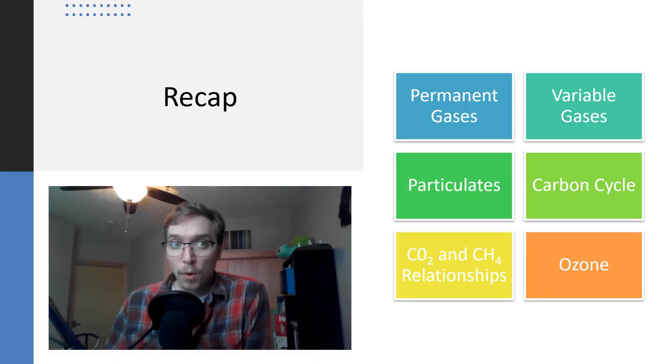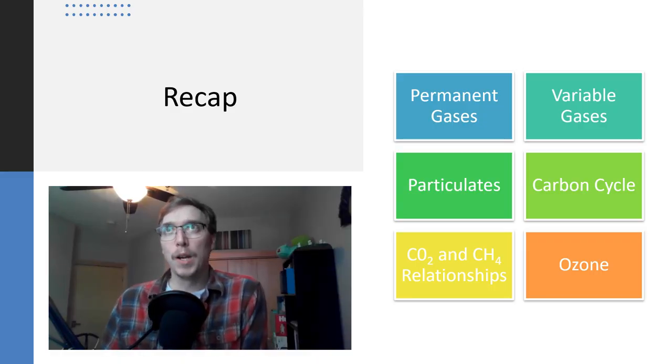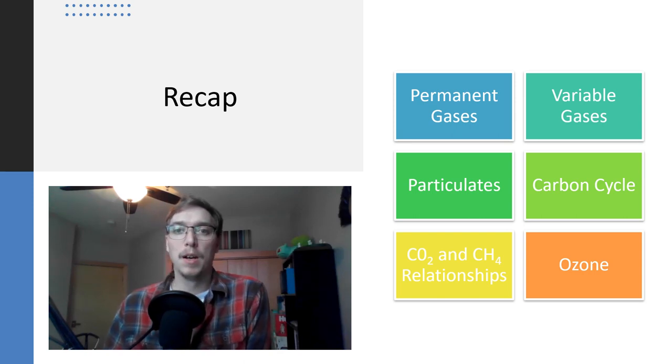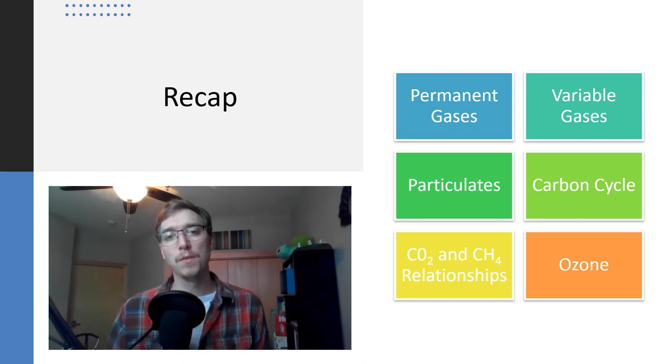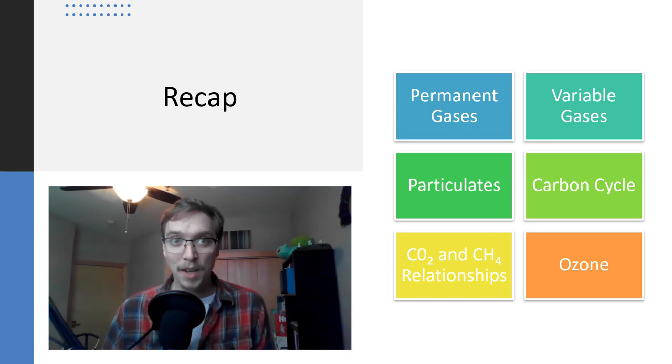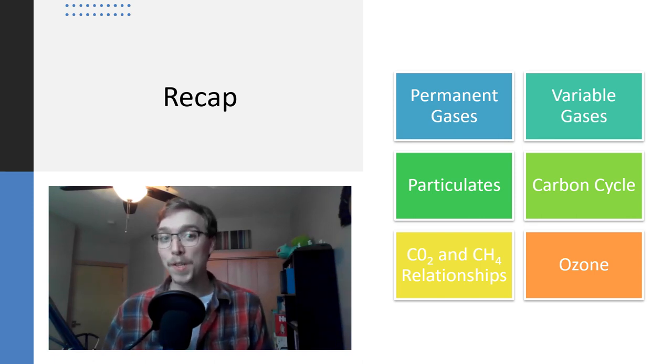So that's all for atmospheric composition. We talked about permanent gases, variable gases, particulates, the carbon cycle, the relationship between CO2 and CH4, and ozone. So we will continue on in the next video, but I will see you then and hope you have a great day.